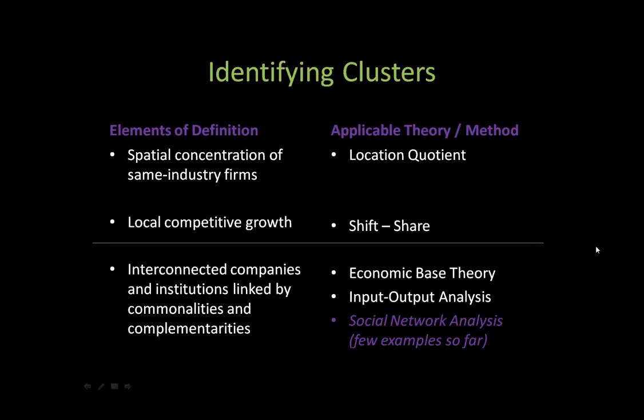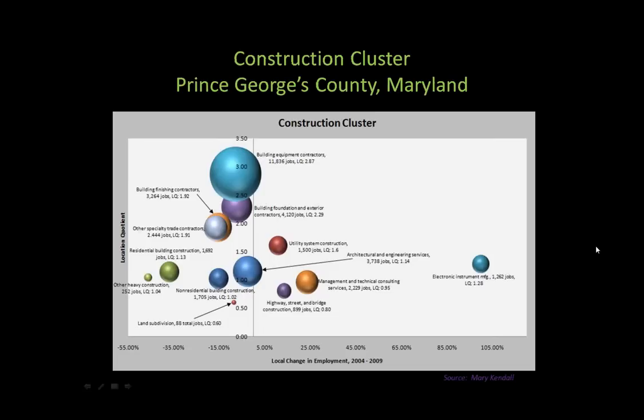Identifying clusters is a whole course in itself, but there are several methods and measures we use. The most common is location quotients, a measure of the spatial concentration of same-industry firms. There is shift share analysis, which breaks down the change in employment between how much is part of the overall national economy, how much is due to the particular industry, and how much is due to local factors. More advanced methods include input-output analysis and social network analysis, which look at connections between industries and between industries and occupations.